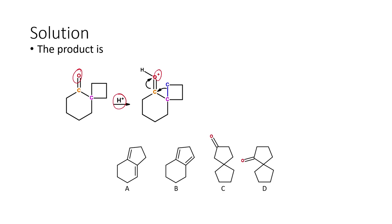Now we know oxygen is electronegative in nature, so it does not want to keep the positive charge. But it is attached to the double bond, so what it does is it pulls one of the double-bonded electrons towards itself, making this particular carbon electron-deficient. In other words, it will force this carbon to become a carbocation.